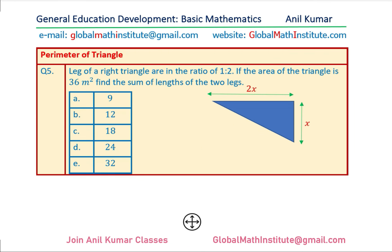The next question: the legs of a right triangle are in the ratio 1 to 2. So if one leg is X, the other is 2X. If the area of the triangle is 36 square meters, find the sum of the lengths of the two legs, which means we need to find 3X.